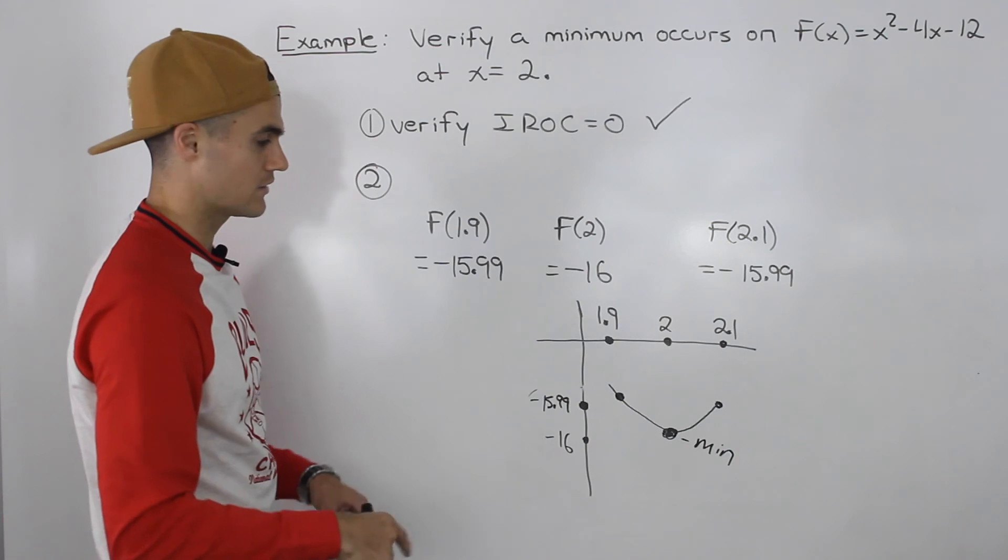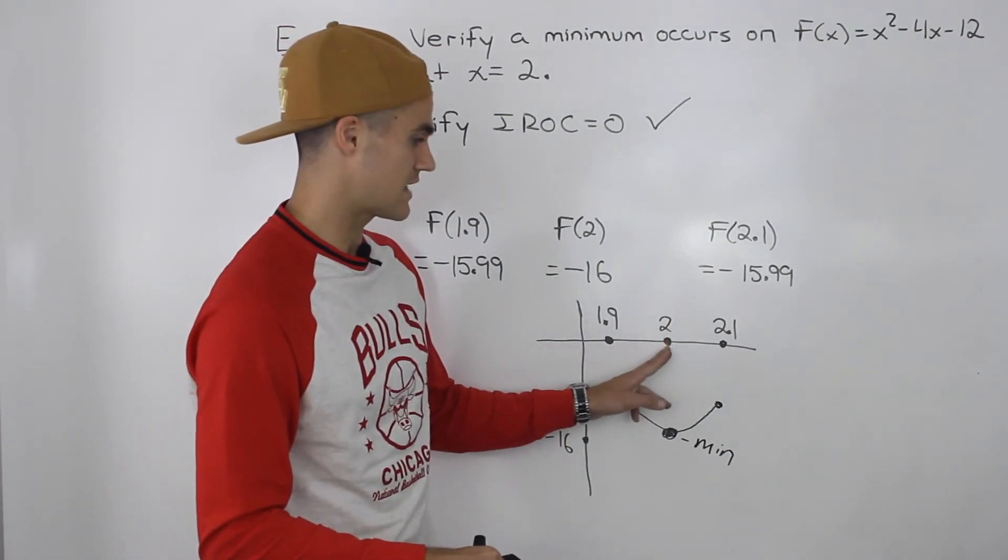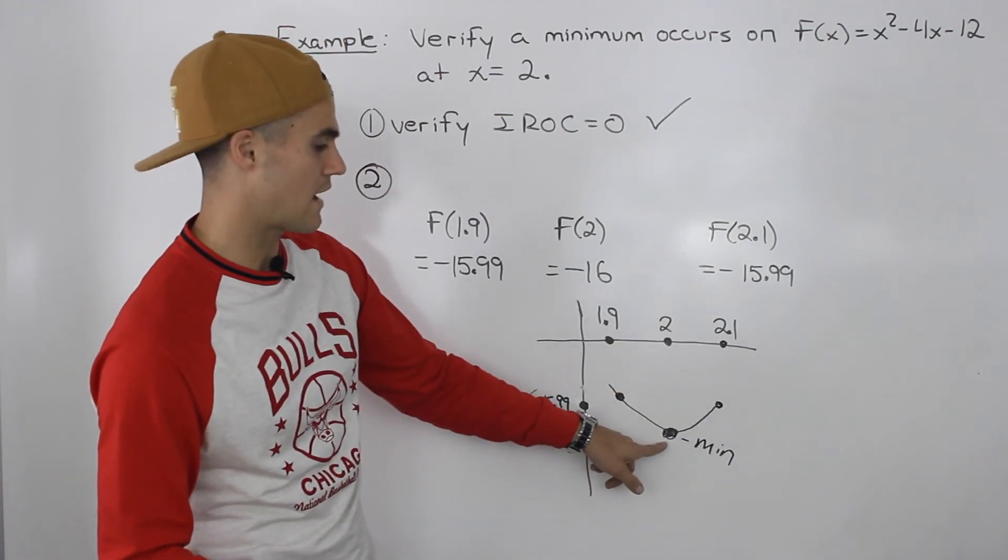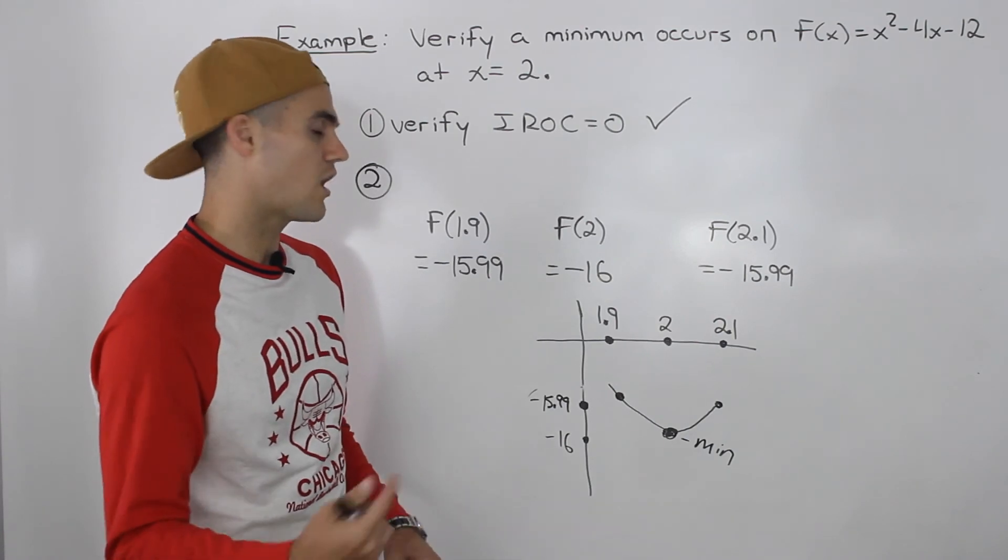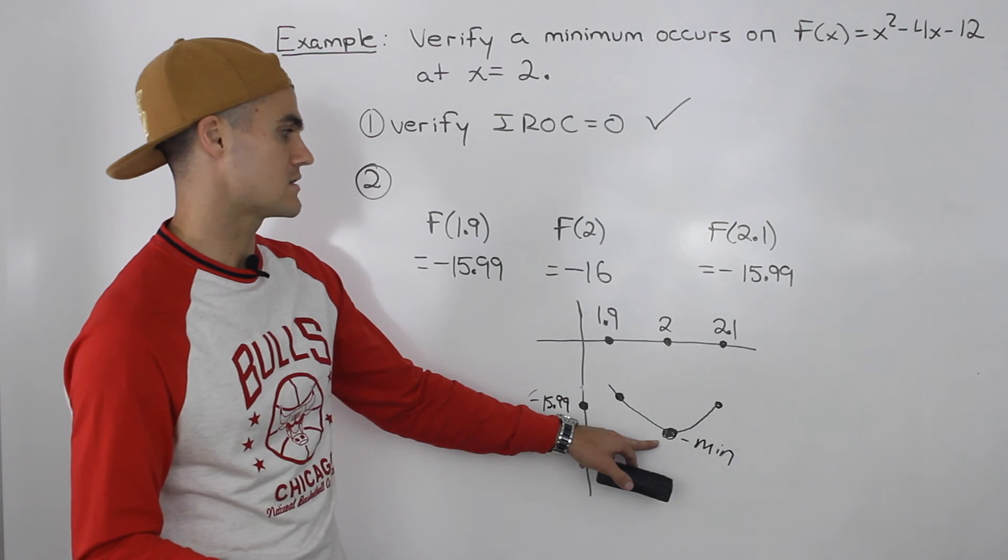So notice how this is obviously a minimum, because the y values for points that are very close to that x value of 2, the y values are above that y value of -16. So we can be pretty confident that a minimum is occurring.